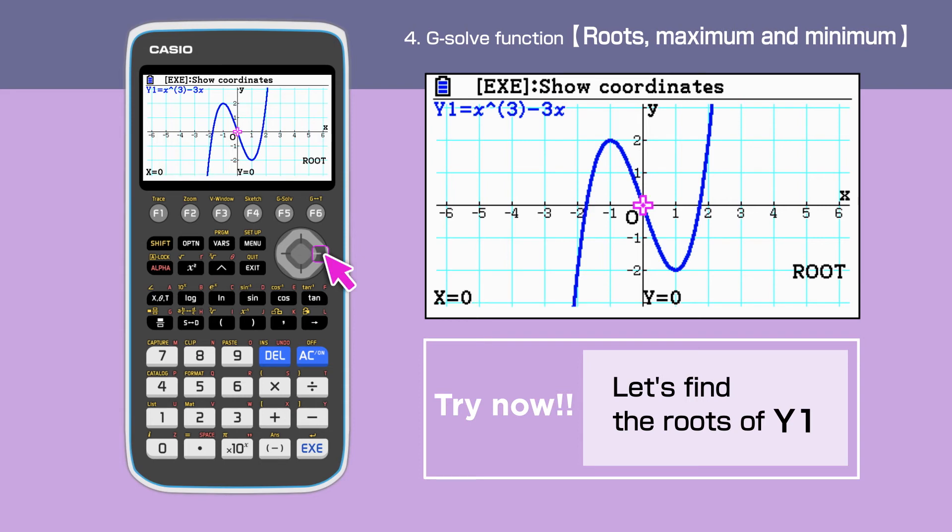Move the cursor to find the next root. The second root is 0. Move the cursor again to find the third root. The third root is 1.732.